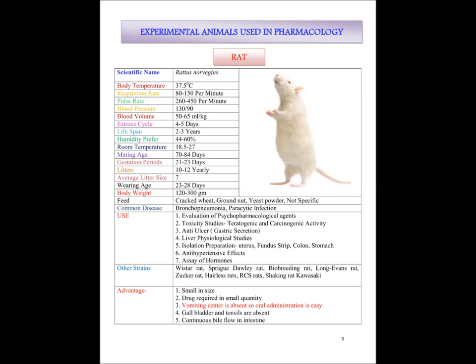They eat cracked wheat, ground nut, yeast powder and other foods — they are not specific and can use biscuits or grain as well. Common diseases they suffer from are bronchopneumonia and parasitic infections. They are used for evaluation of psychopharmacological agents, teratogenic and carcinogenic activity studies, anti-cancer and gastric acid secretion studies such as anti-ulcer activity, liver physiological studies, and isolation preparation of uterus, duodenum, colon, stomach and many more.